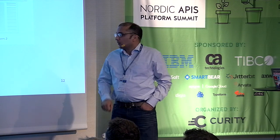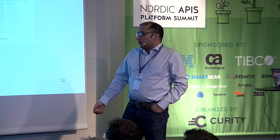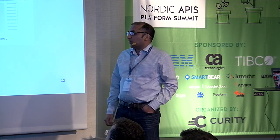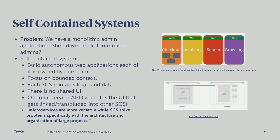An API is optional in this model — it would be useful for your mobile clients perhaps, but if you're working strictly on the web you don't really need an API, and that's an interesting thought. Microservices are more versatile, while self-contained systems solve problems specifically with the architecture and organization of large projects. In the diagram you can see different bounded contexts — like search and invoicing — each with their own web front end that you can link together, and you can tie them together with consistent CSS so they all look the same but are very different applications.